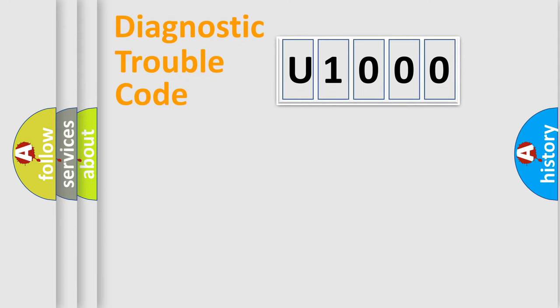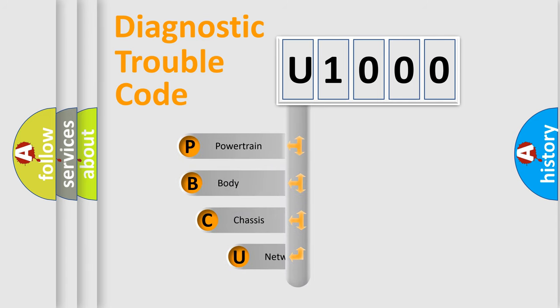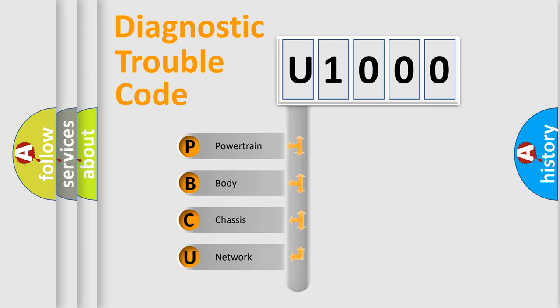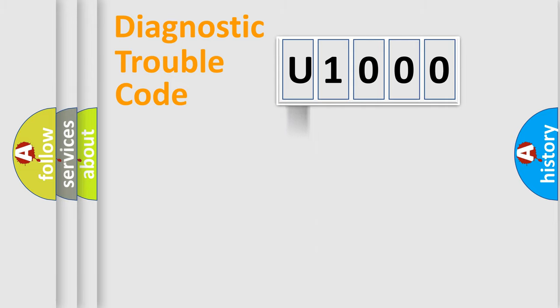Let's do this. First, let's look at the history of diagnostic fault code composition according to the OBD2 protocol, which is unified for all automakers since 2000. We divide the electric system of an automobile into four basic units: Powertrain, Body, Chassis, and Network. This distribution is defined in the first character of the code.